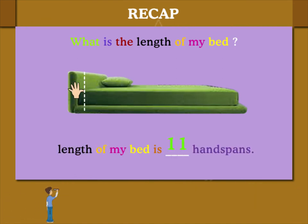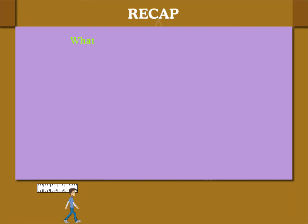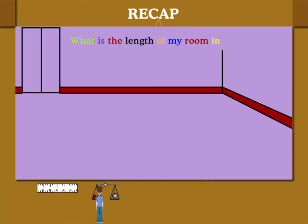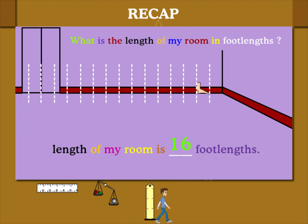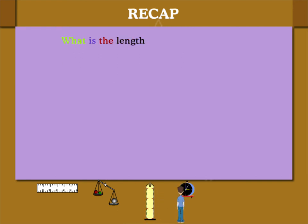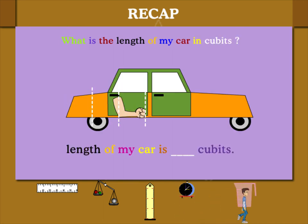The length of my bed is eleven handspans. Now, what is the length of my room in foot lengths? Let's measure. The length of my room is sixteen foot lengths.